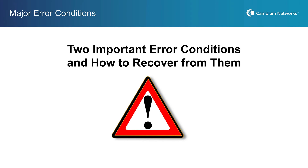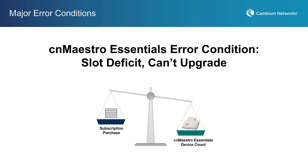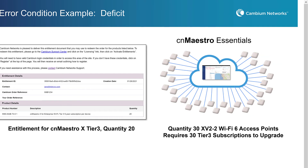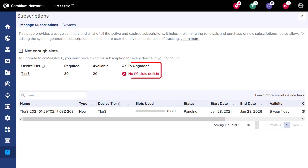Let's look at two important error conditions that will delay the upgrade process and how to recover from them. These error conditions are based on the rule that you must purchase subscriptions that equal or exceed the device tier and quantity mix of devices currently in your CNMeisterOx Essentials account. For example, if you have 30 Tier 3 devices in your account but inadvertently purchase only 20 Tier 3 subscriptions, when you activate these subscriptions you'll get an error message indicating a deficit. When you have a deficit, your account will not be upgraded and will continue to operate as CNMeisterOx Essentials until the deficit is corrected.